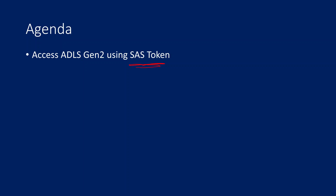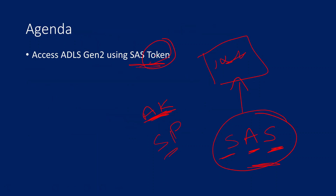First, you need to understand what a SAS token is. In our previous videos we saw how to access a storage account using an account key and also using a service principal. Every storage has a key with which we can connect and access data. Similarly, there is something called a SAS token — Shared Access Signature. With this token you can connect to your storage accounts and access data. These tokens have a validity period; you can define it as one hour or two days, for example.